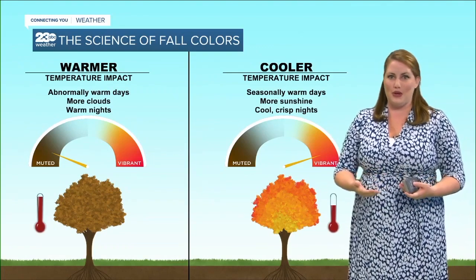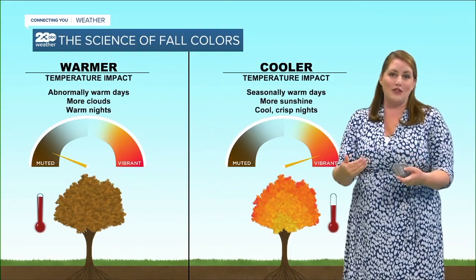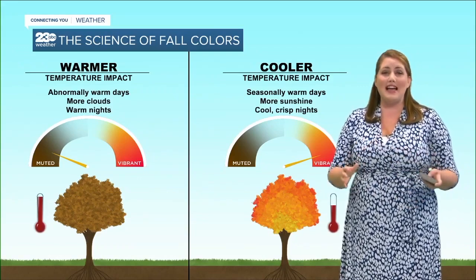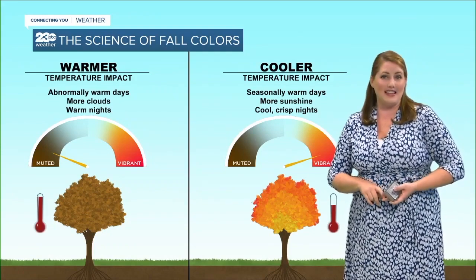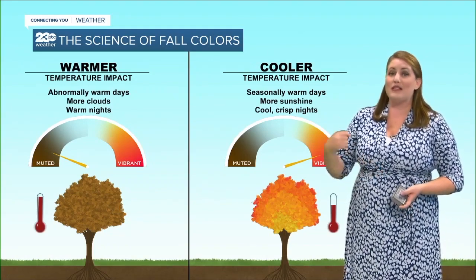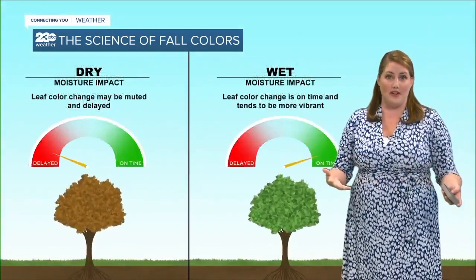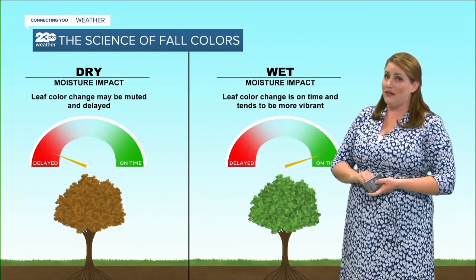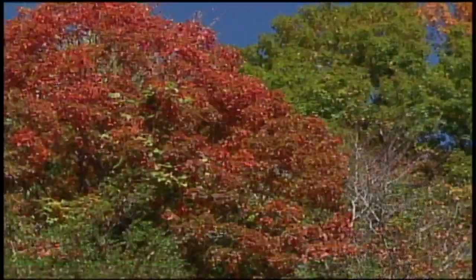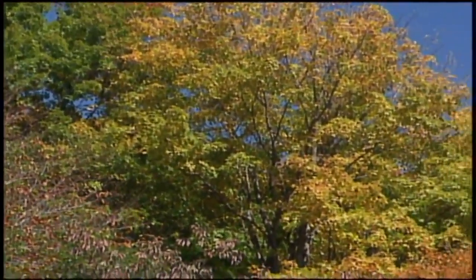During warm days, lots of sugars are produced in the leaf, but the cool nights and the gradual closing of veins prevent these sugars from moving out. These conditions — lots of sugar and light — spur production of anthocyanin. A severe summer drought can delay the onset of fall colors. A wet spring, good seasonal summer moisture, and sunny fall days with cool nights produce the most brilliant autumn colors.